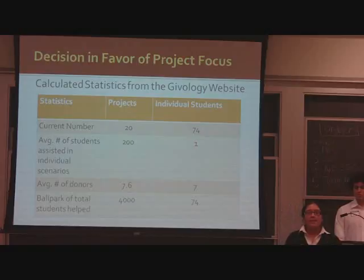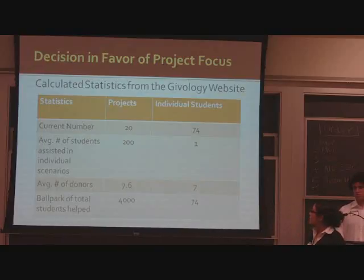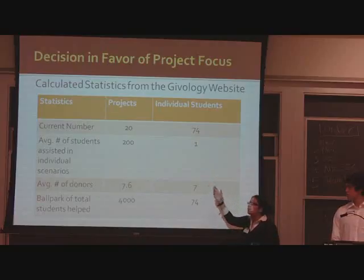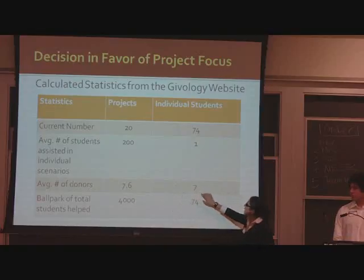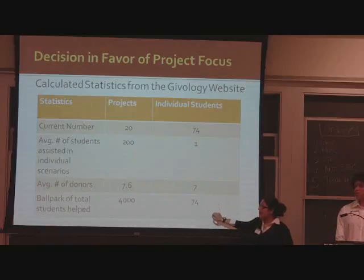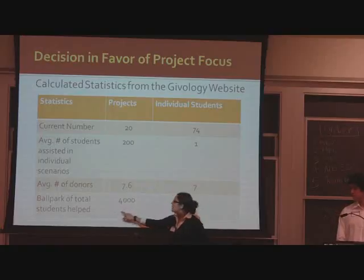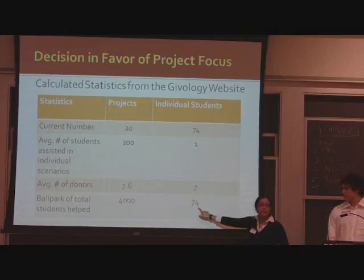My partner and I decided to make a decision in favor of projects. These are calculated statistics from the Evole website and the PACE documents we were provided. The current number of projects is 20, whereas individual students are 74. The average number of students assisted per project is 200, versus just one for an individual student. The average number of donors per project is 7.6, nearly the same as for individual students. However, the total student impact is 4,000 per project — almost 50 times more than helping one individual student.